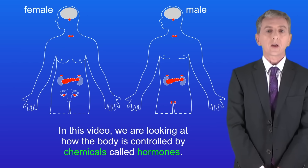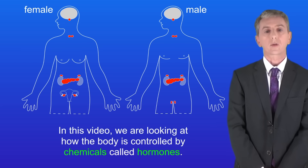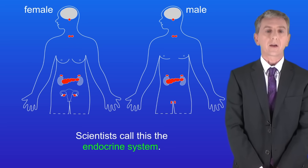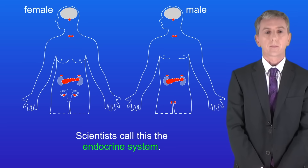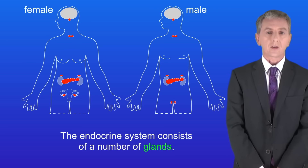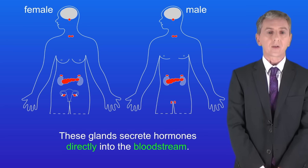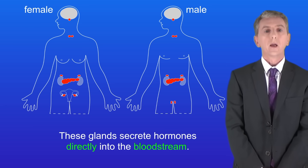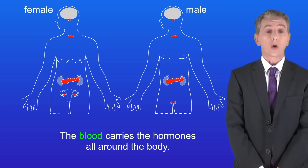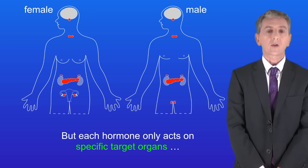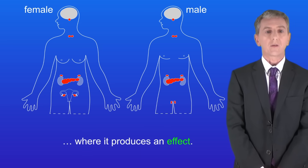In this video we're looking at how the body is controlled by chemicals called hormones. Scientists call this the endocrine system. The endocrine system consists of a number of glands, and these glands secrete hormones directly into the bloodstream. The blood carries the hormones all around the body, but each hormone only acts on specific target organs where it produces an effect.